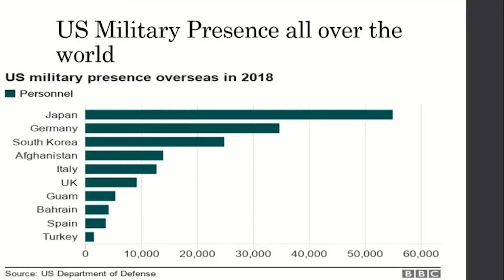It is also worth remembering that the US has global military commitments. In fact, the largest single deployment of US forces is not in Europe but in Japan, with 60,000 US military personnel posted there. This is accurately shown in the infographic, followed by Germany, South Korea — where forces are posted due to the defense agreement protecting against North Korea — Afghanistan, where the US has been fighting since 2001, and then Italy, UK, Guam, Bahrain, Spain, and Turkey.